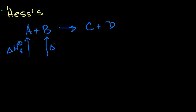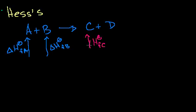So we have the standard heat of formation of A and B, and we can also look up in a table the heat of formation of C and the heat of formation of D. All of these things we can look up in a table.